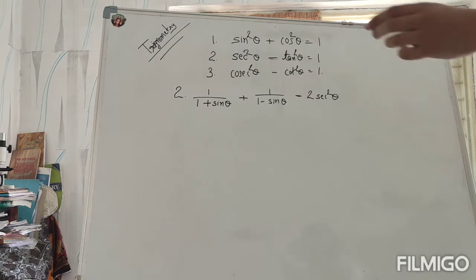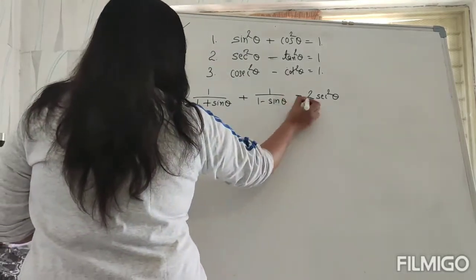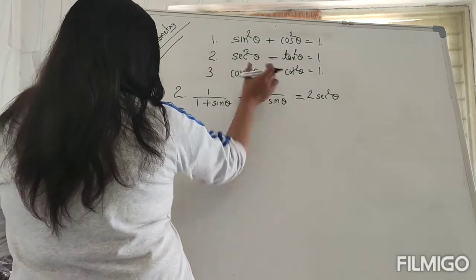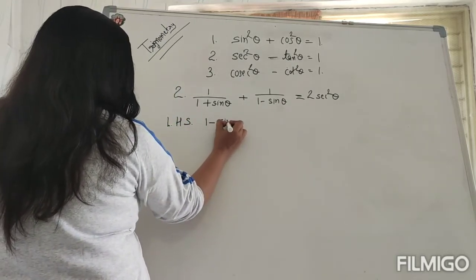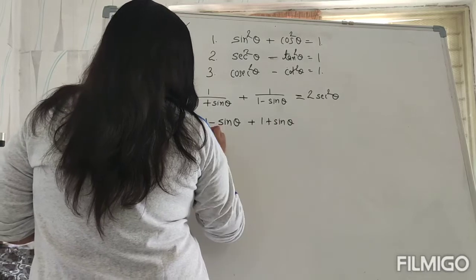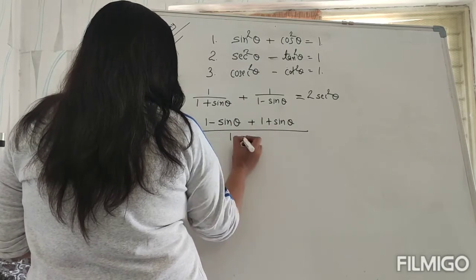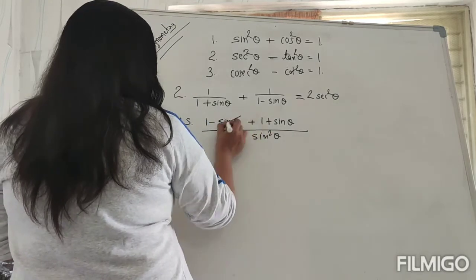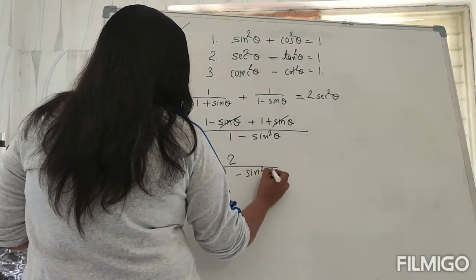Question 2: 1/(1 + sinθ) + 1/(1 - sinθ). So LHS — in this LHS we will take the LCM of the denominator. So (1 - sinθ) will be multiplied here: 1 - sinθ plus (1 + sinθ), whole upon — the denominator becomes 1 × 1 - sin²θ. The sinθ terms cancel, giving us 2 upon 1 - sin²θ.